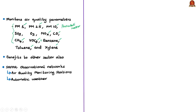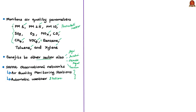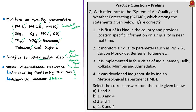Besides health, SAFAR benefits several other sectors including agriculture, aviation, infrastructure, disaster management and tourism, which are directly or indirectly affected by air quality and weather. The SAFAR observational network of air quality monitoring stations and automatic weather stations is established within city limits, representing selected micro-environments including industrial, residential, background or cleaner urban, and agricultural zones as per international guidelines, ensuring true representation of the city environment. This concludes the discussion of this news article.